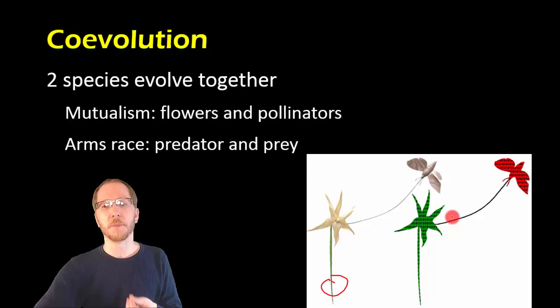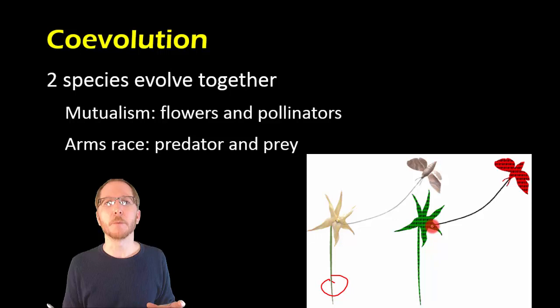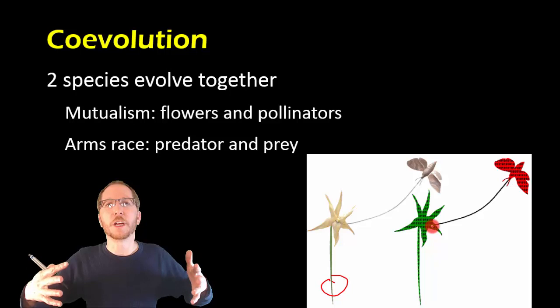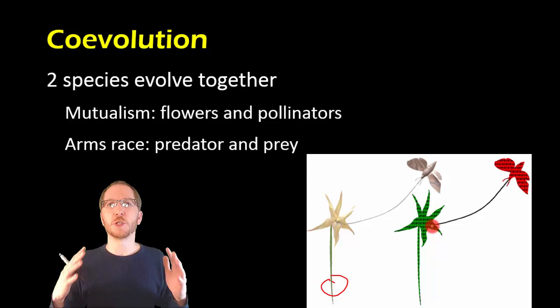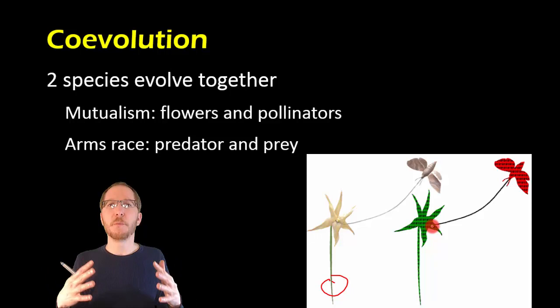So there's lots of these relationships, and sometimes it's more of an arms race, like the cheetah and the gazelle. Sometimes, like with the flower and the moth, they're actually working together because one gets food and one gets pollinated. But there's many of these relationships where two organisms will work together and they'll evolve to either better suit each other, or they'll evolve to better try to take advantage of one another, or in the case of prey, avoid one another.